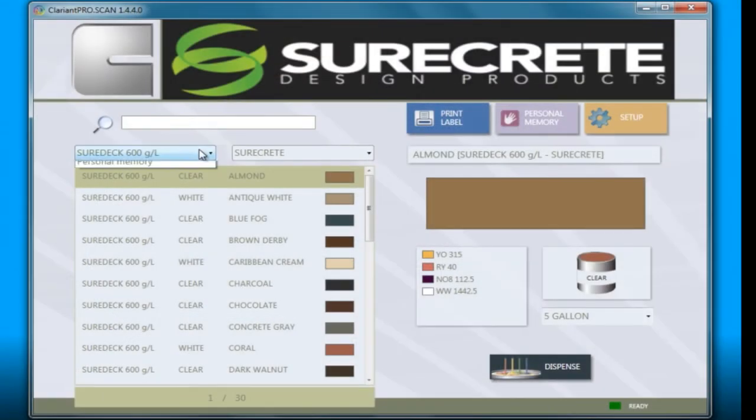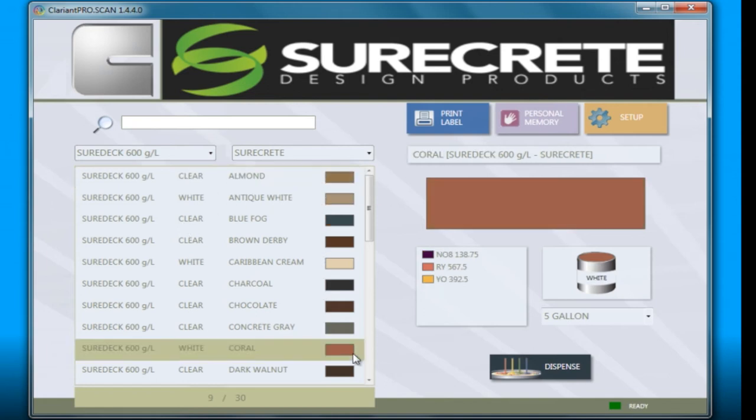A simple five-click system will have you tinting in seconds. Choose your sealer or coating. Choose your color. Choose your size. Click Dispense.